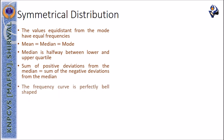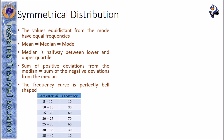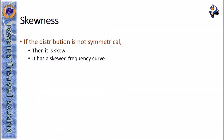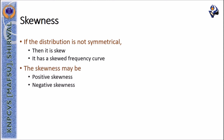The frequency curve will be perfectly bell-shaped if we plot the frequency curve of the given data and observe a symmetrical distribution. If the distribution is not symmetrical, it will have a skewed frequency curve. The skewness may be positive skewness or negative skewness.